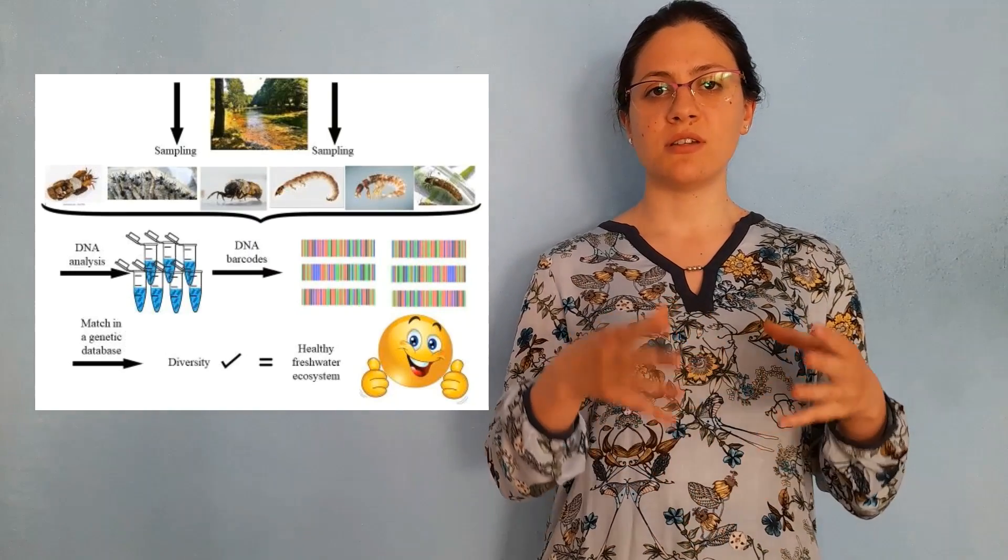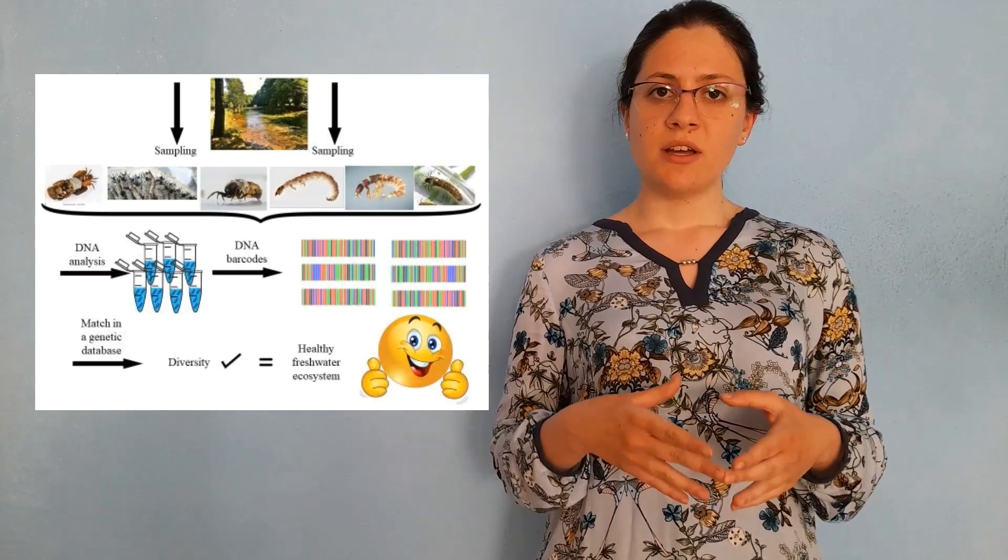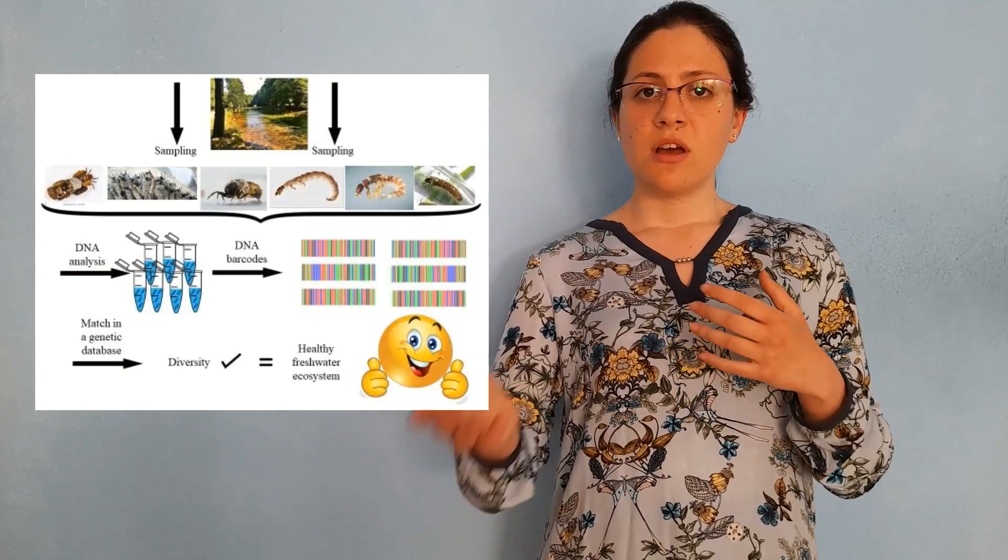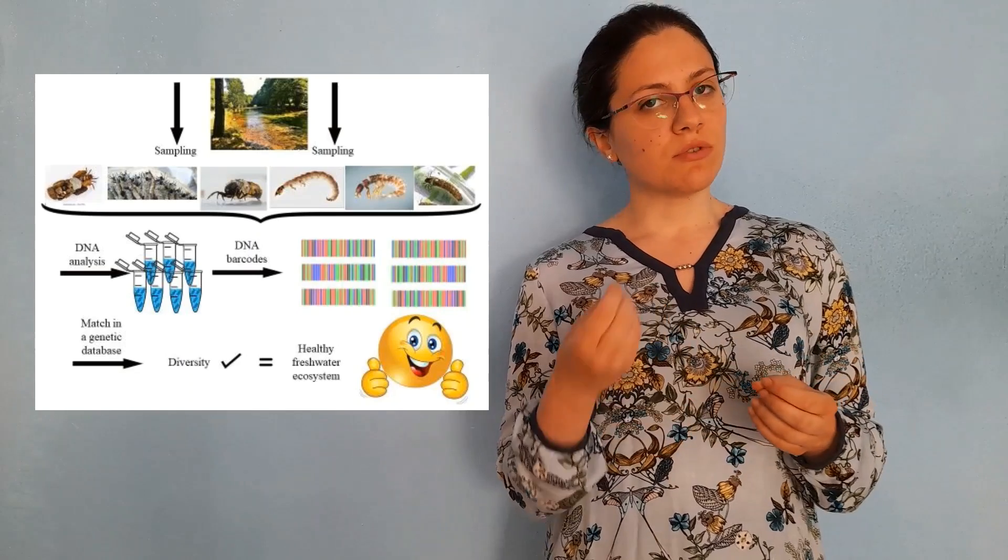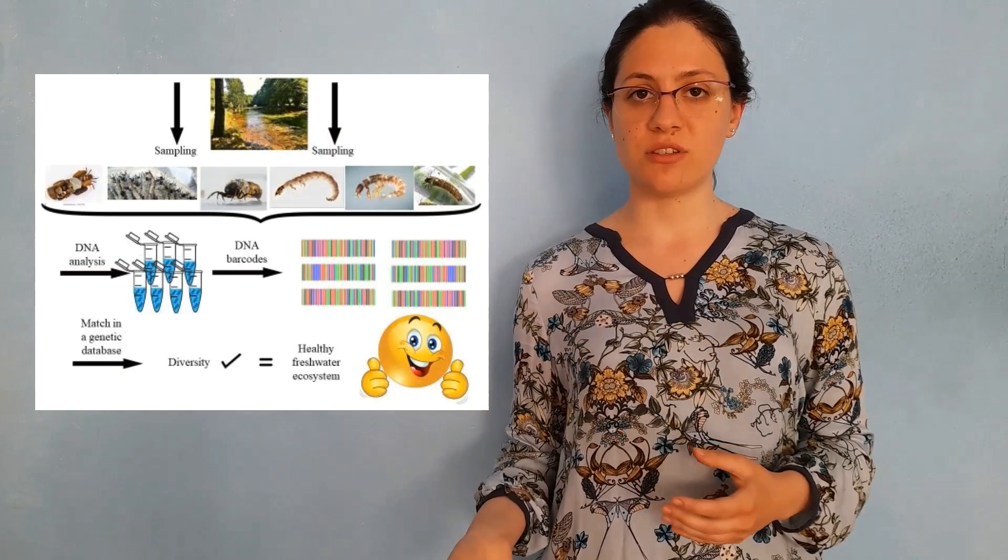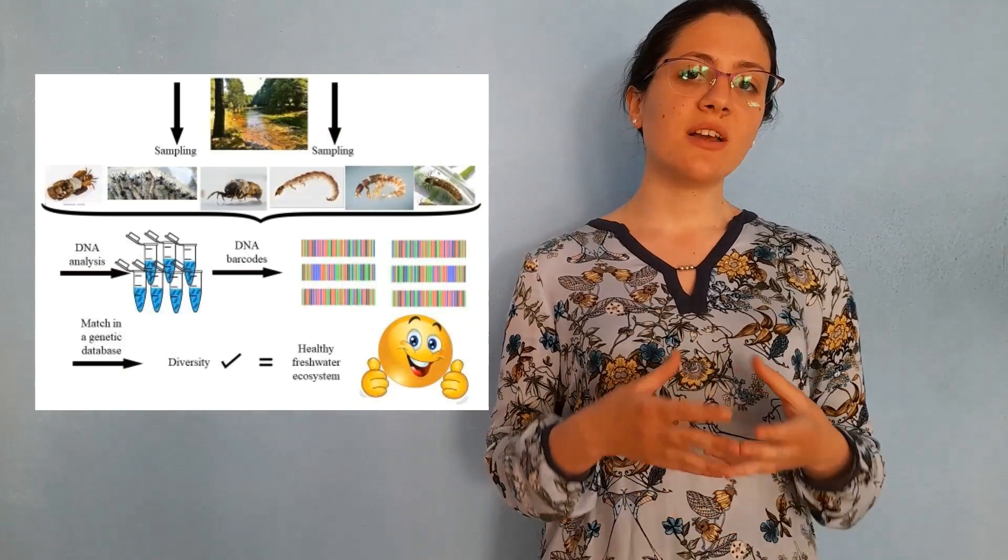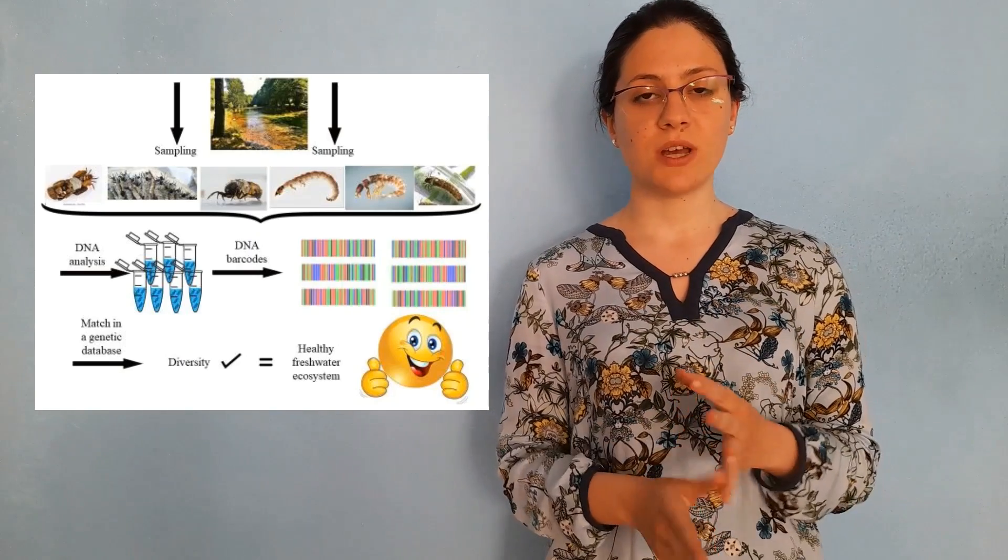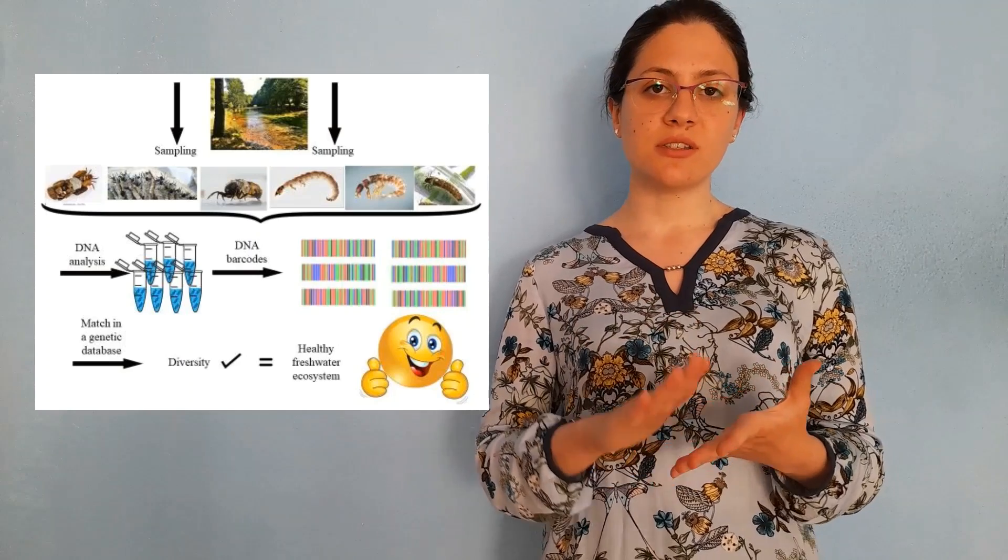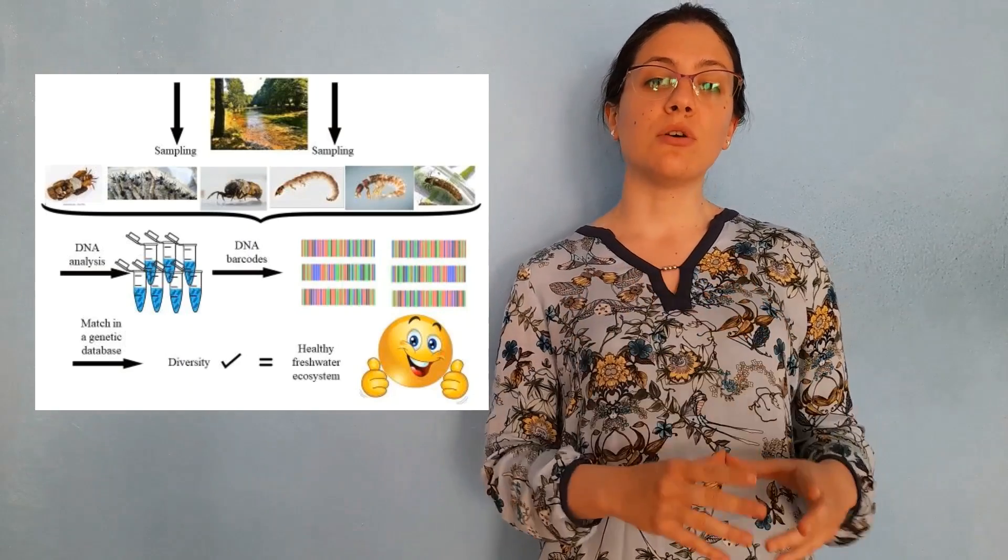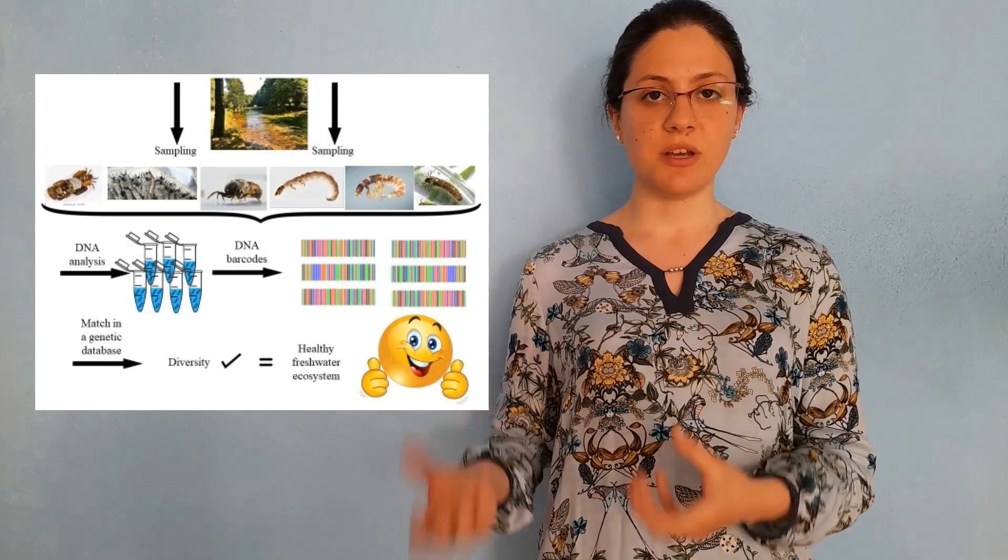We have sampled insects called Trichoptera that live at the bottom of lakes and streams as larvae, and their general diversity is directly linked to health of a particular ecosystem. We have genetically analyzed 37 samples and found 14 distinct species.